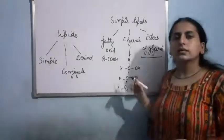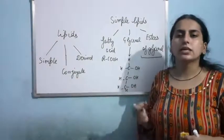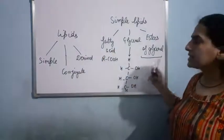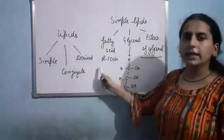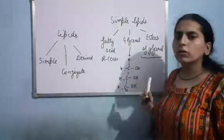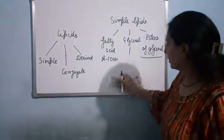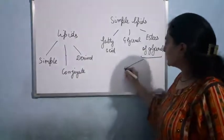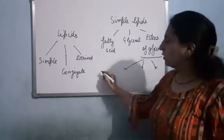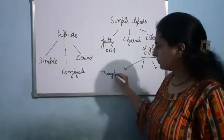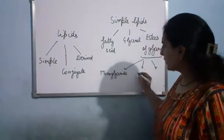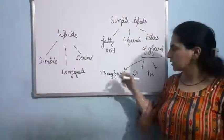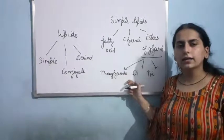Esters of glycerol are formed by the esterification reaction between fatty acid and glycerol. These are of three types: monoglyceride, diglyceride, and triglyceride.